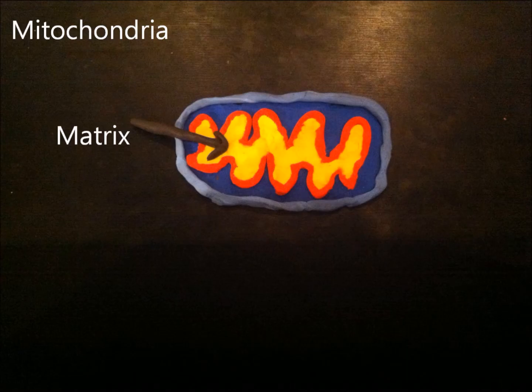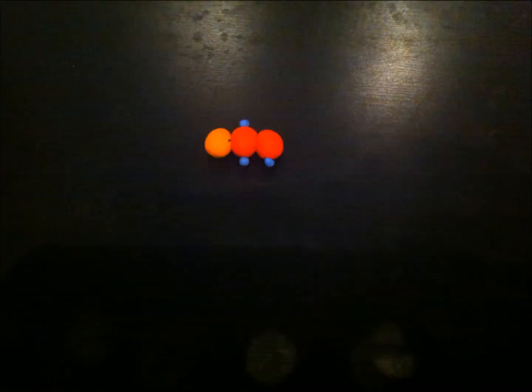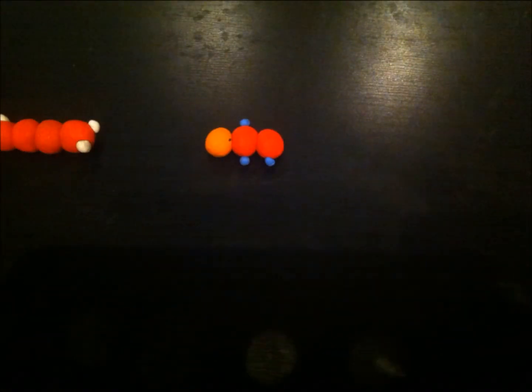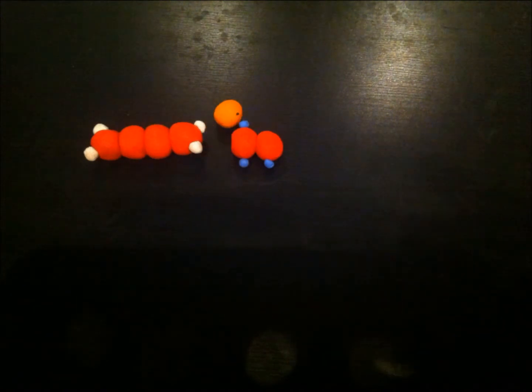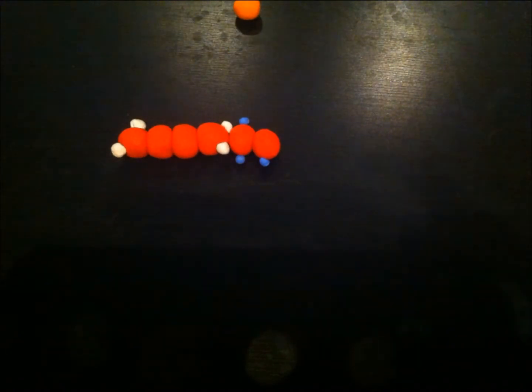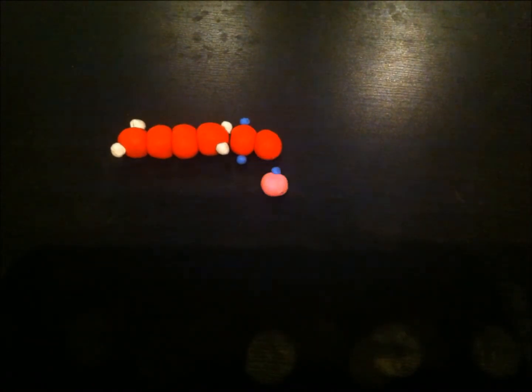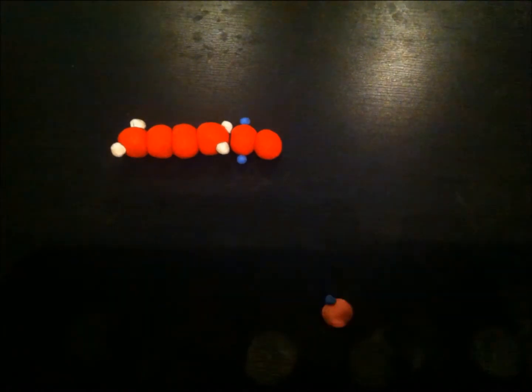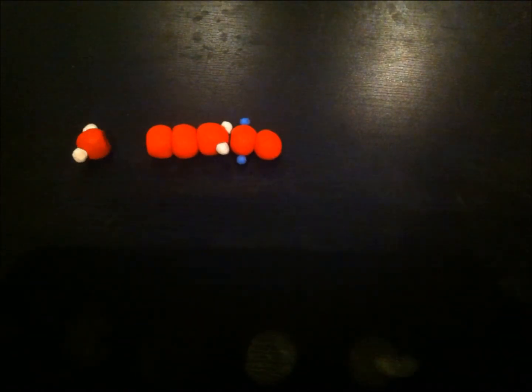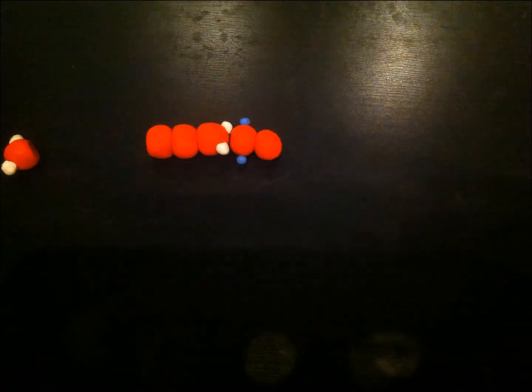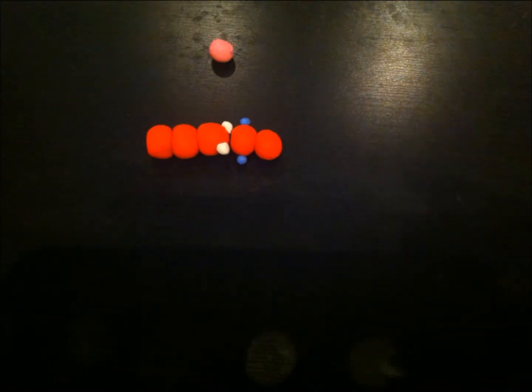The Krebs cycle is a cyclic procedure where a product is reused as the reactant. This occurs in the mitochondrial matrix. Oxaloacetate binds with the active site of the acetyl coenzyme A, releasing coenzyme A after the reaction. NAD-positive is reduced to produce NADH. Carbon dioxide is then released. This process is repeated once more.